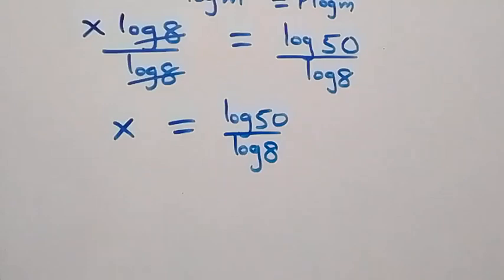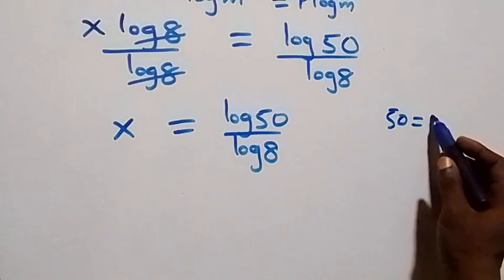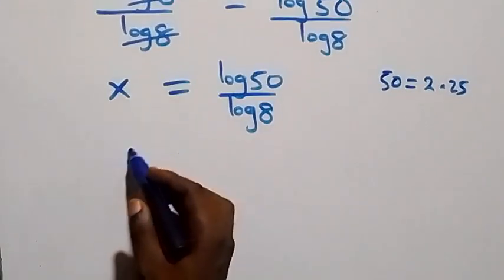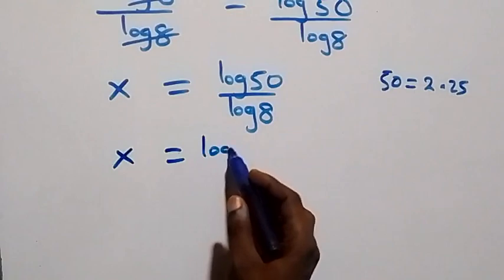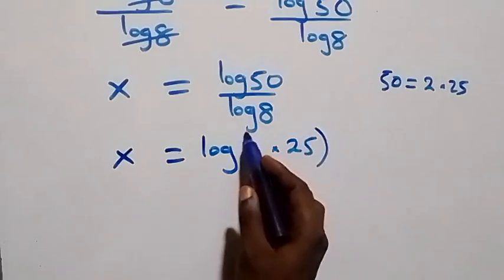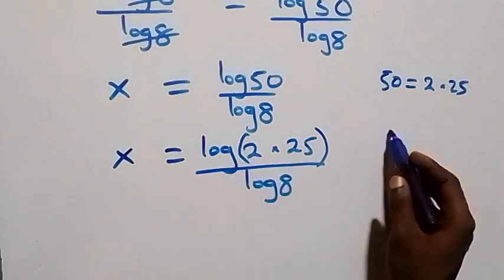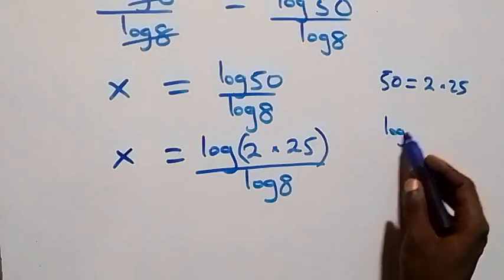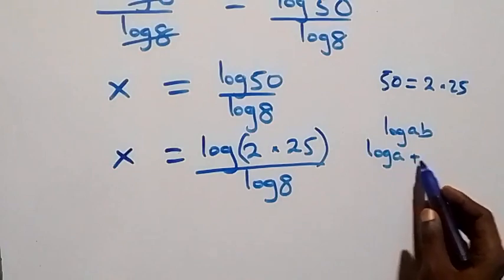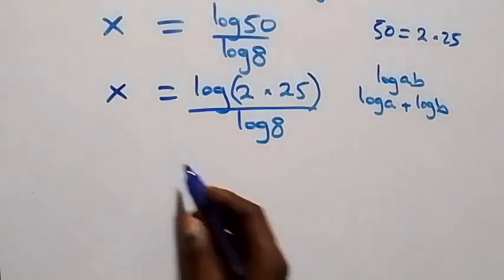Next, we can express 50 as 2 times 25. So what we have becomes x equals to log of 2 times 25, over log 8. This follows from the logarithm product rule: log of a times b is the same as log a plus log b.